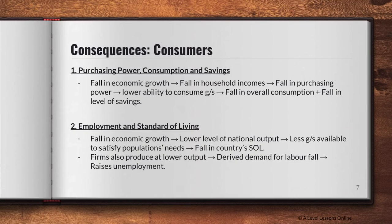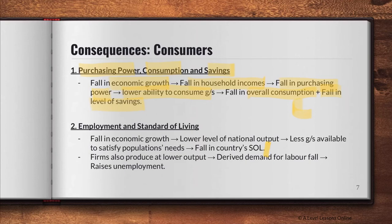For consumers, we look at purchasing power, consumption, and savings. A fall in economic growth leads to a fall in household incomes due to a fall in national income. This leads to a fall in purchasing power — lower disposable income to purchase and consume goods and services. As a result there will be a fall in overall consumption as well as a fall in savings. Firms cutting costs will cut wages, further lowering disposable income.